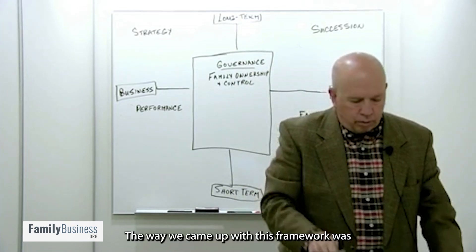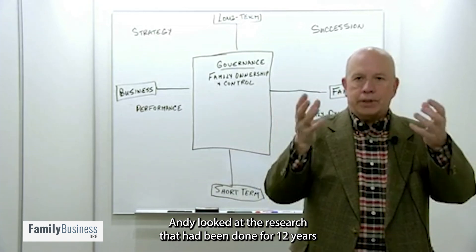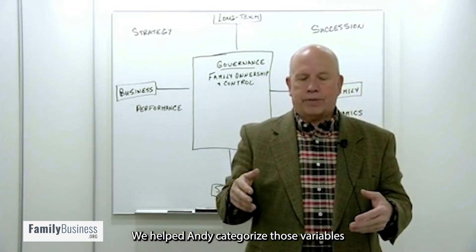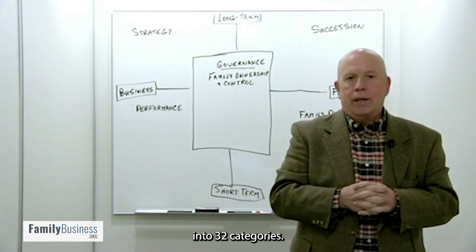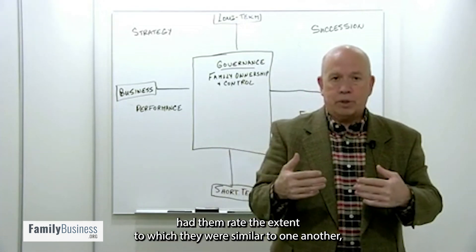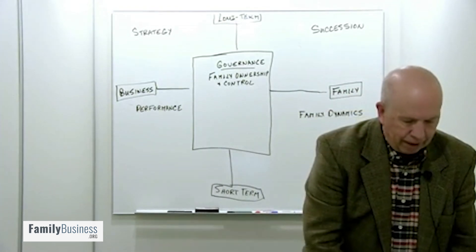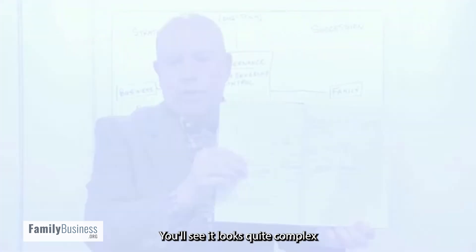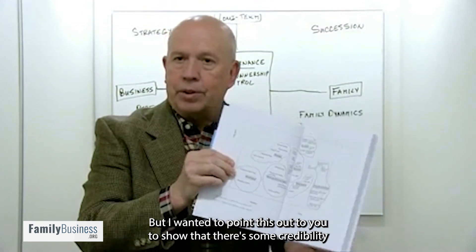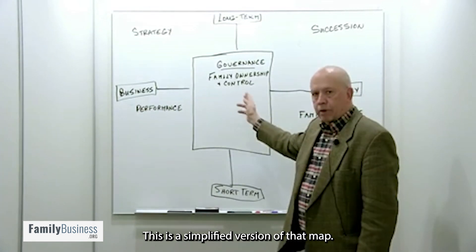The way we came up with this framework was that it was developed at Texas Tech University. Andy looked at the research that had been done for 12 years and pulled out outcome variables. There were 327 outcome variables. We helped Andy categorize those variables into 32. We then took those categories and sent them out to experts in family business, had them rate the extent to which they were similar to one another, and then did an analysis that enabled us to create a map of family business. This is what the map looked like. You'll see it looks quite complex, and there are a lot of subcategories within it. I wanted to point this out to show that there's some credibility in what I'm presenting today in terms of it being grounded in research. This is a simplified version of that map.